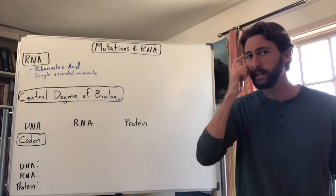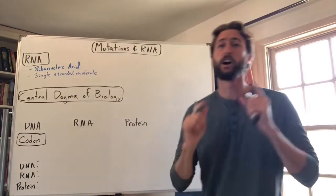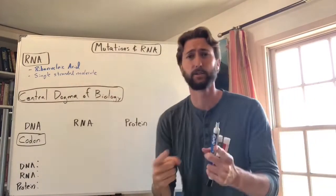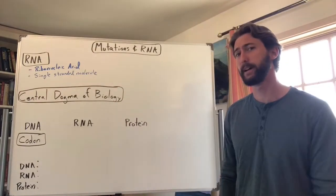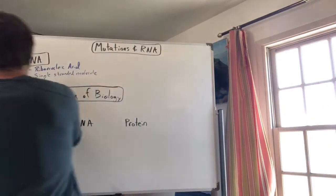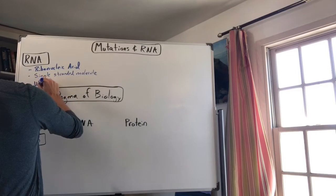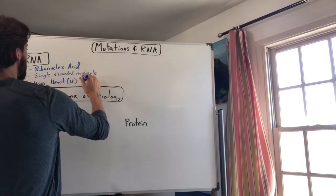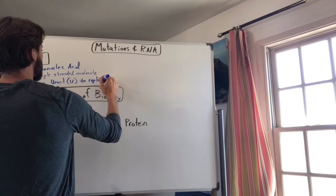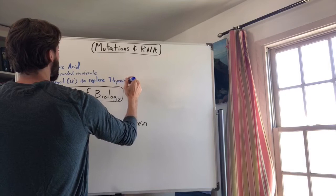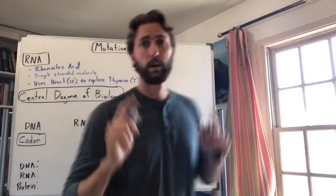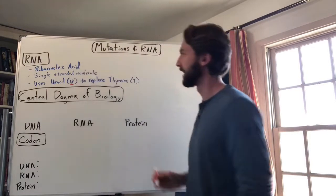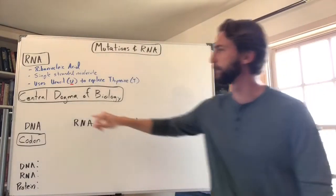So RNA is single-stranded, not double-stranded. The last difference between RNA and DNA is the bases. In DNA we have A, T, C, and G. RNA has those same bases except there's no thymine — instead it's replaced by a base called uracil, abbreviated U. So RNA uses uracil to replace thymine.